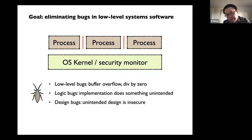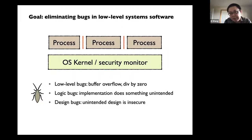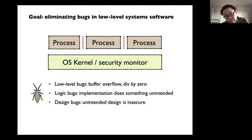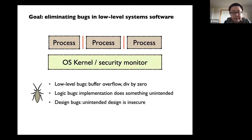And your implementation does something different from your design. Also, the worst kind might be those design bugs, like the design you had in mind was just wrong. For example, you wanted to design an OS kernel for isolation, but your system call interface design was flawed, and there's actually a way for processes to leak. Those are the kinds of bugs we're thinking about and wanted to get rid of.